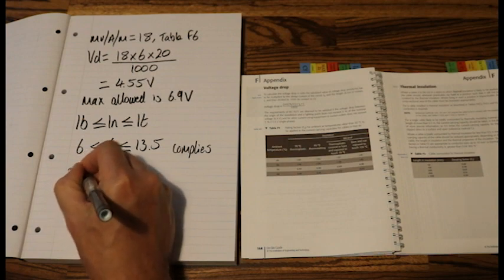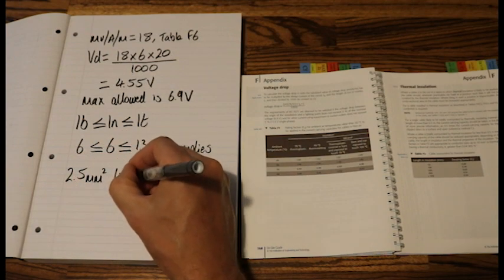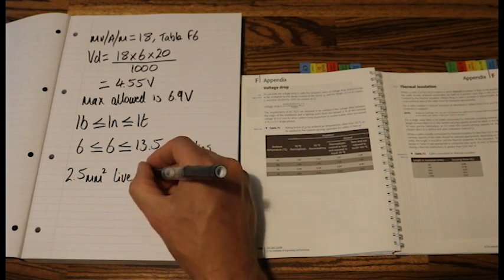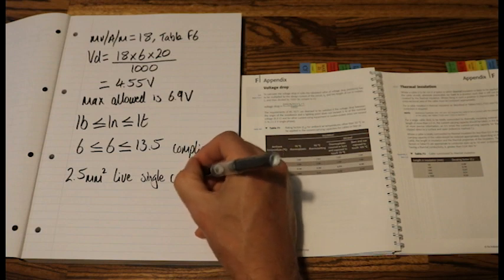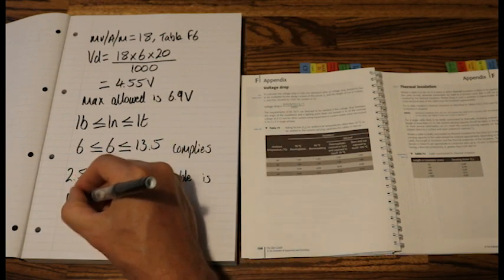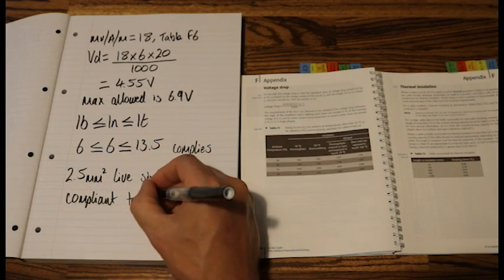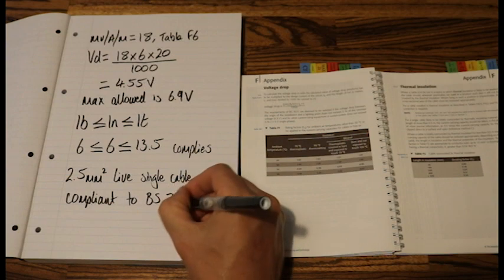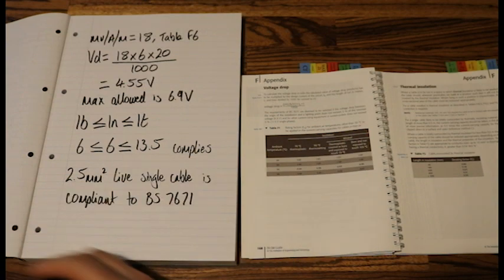So our final sentence that we would write. Would be. 2.5mm single cable is compliant to BS7671. And there we have it. That question is answered.